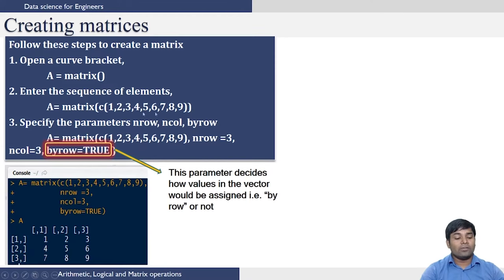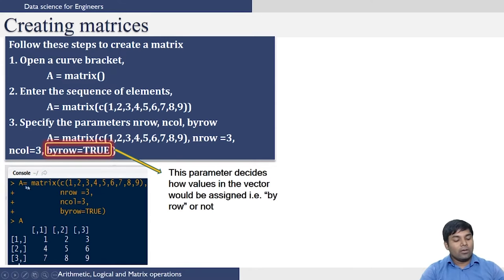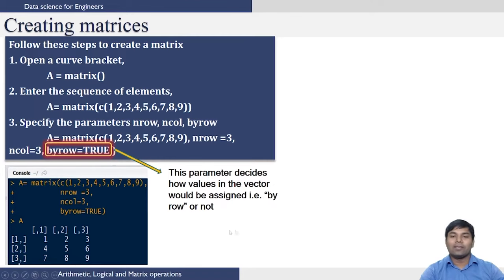Now we have seen what is involved in creating a matrix. Let us create a matrix with elements 1 to 9 containing three rows and three columns, filling the elements in a row-wise fashion. This is the command which does this, and if you see the output the elements 1, 2, 3, 4, 5, 6, 7, 8, 9 are filled in a row-wise fashion.